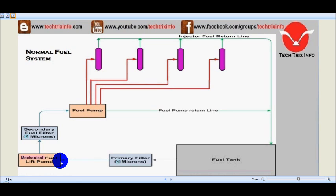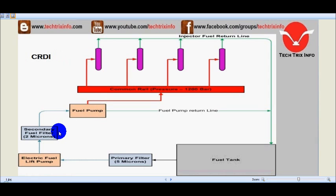In a normal fuel system, the secondary fuel filter has a 5 micron rating, but in a CRDI system, it is of 2 microns.